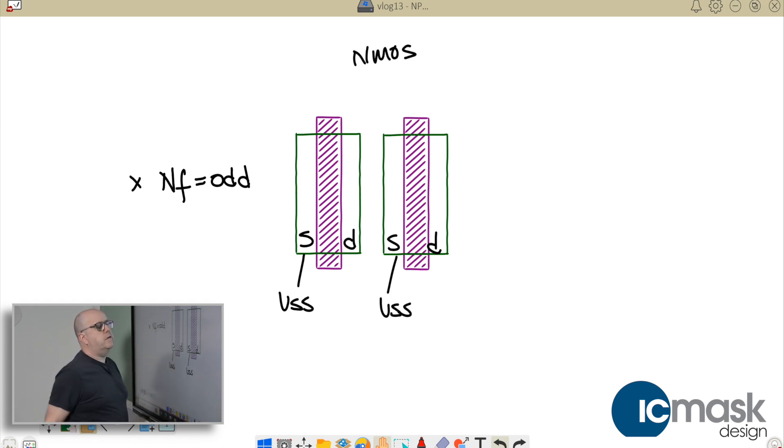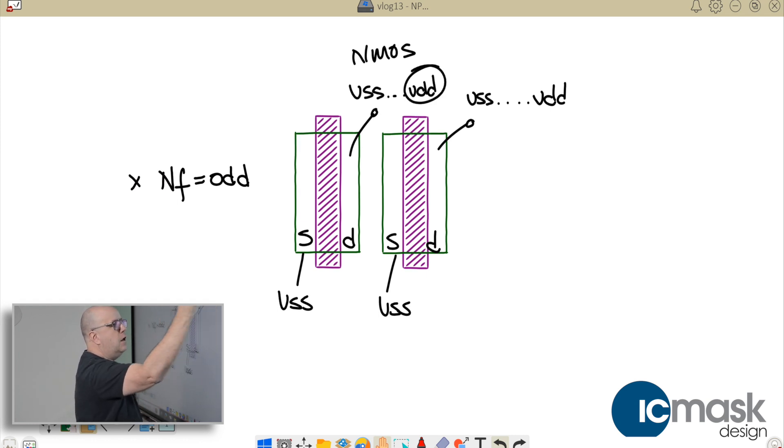Our drains are going to any potential effectively between VSS to VDD, so they can be at any potential within this range. Let's take worst case here, we're going to assume right now we're going to VDD. What I have created by putting two transistors beside each other is I have created effectively an NPN transistor - the N of the drain, the P of the P well, and the N of the source.